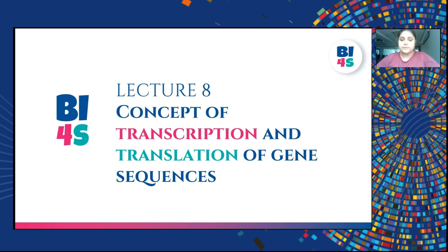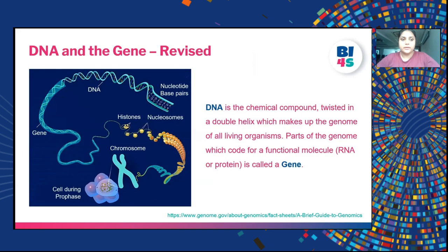Let us first revise a few concepts. DNA is a chemical compound which is double helical in nature and it is made up of four nucleotide base pairs called A, T, G and C. This DNA makes up the genome of an organism, and the functional units of this genome are called genes.